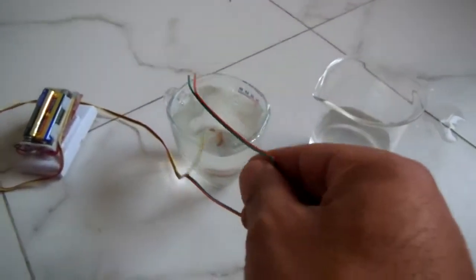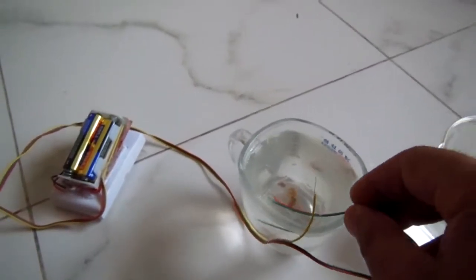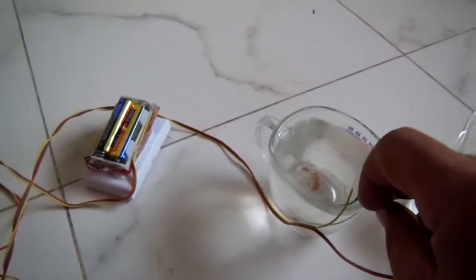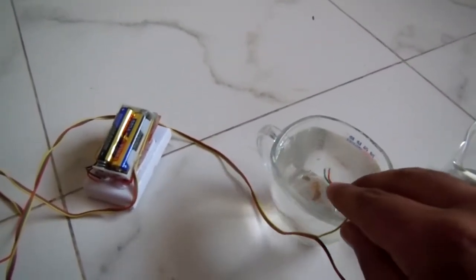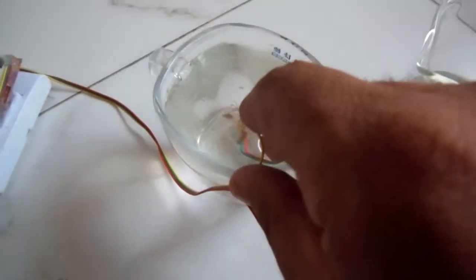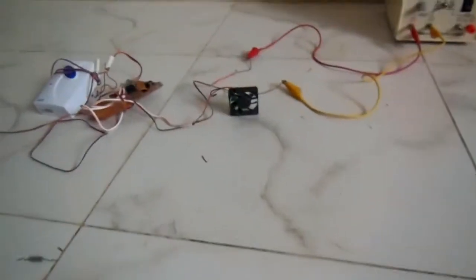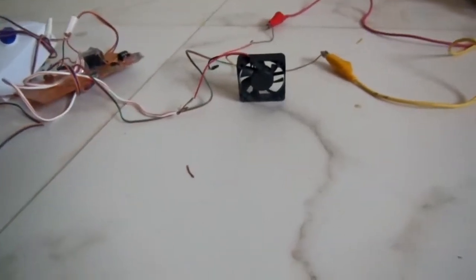So when we insert this gauge in the water tank, what happens? In this way, it again stops operating.